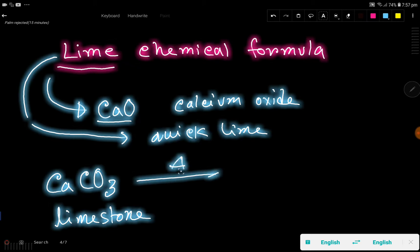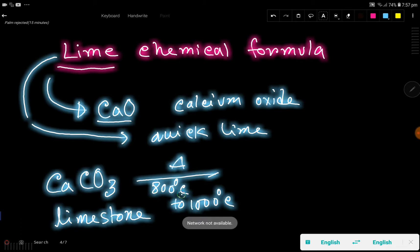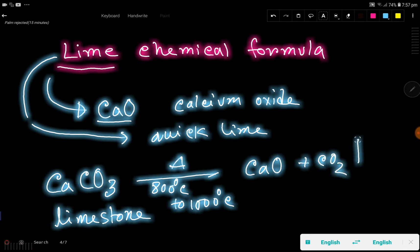If you heat limestone at higher temperature, you need 800 to 1000 degrees Celsius. If you heat this limestone to 800 to 1000 degrees Celsius, then you will get lime calcium oxide, which is lime or quick lime, plus carbon dioxide. This carbon dioxide will go to the air.